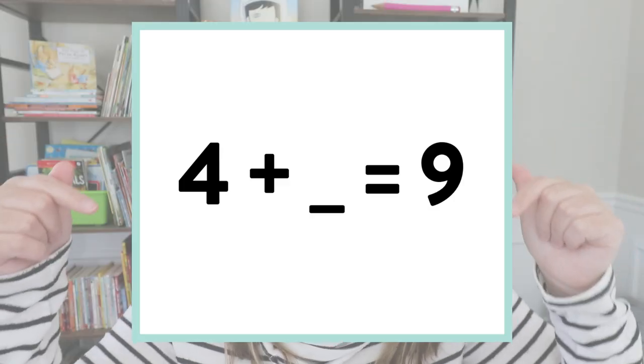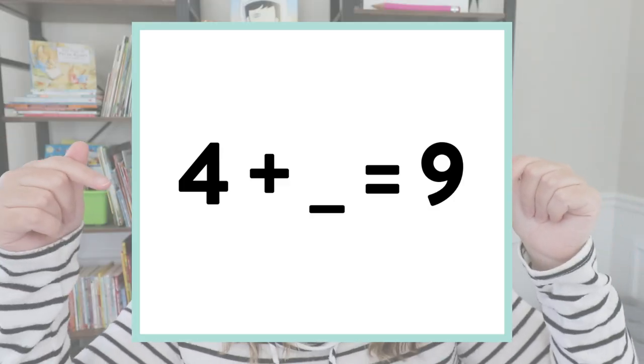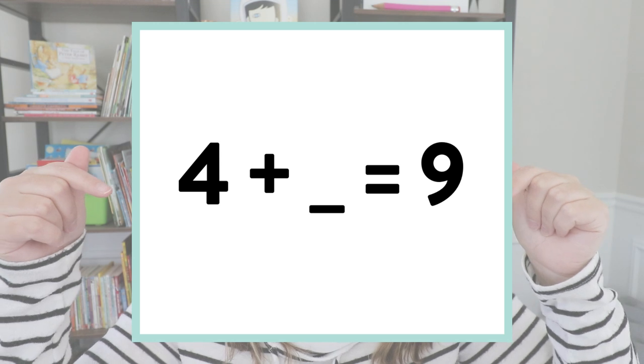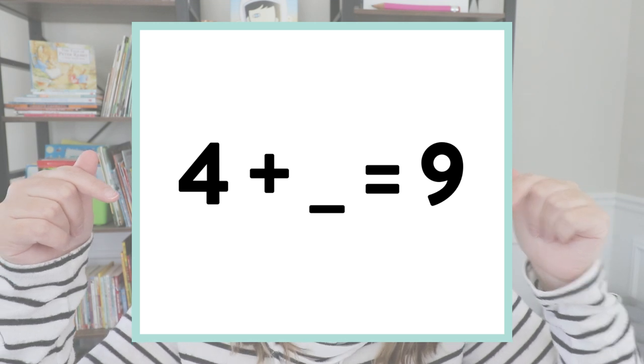When we're talking about missing addend problems, this is what it normally looks like. It might say four plus blank equals nine. We have two addends and a sum. One of those addends is missing — hence missing addend — and students need to solve for that missing addend.